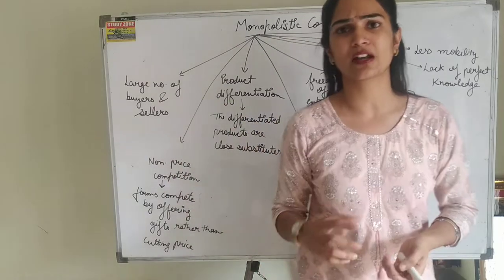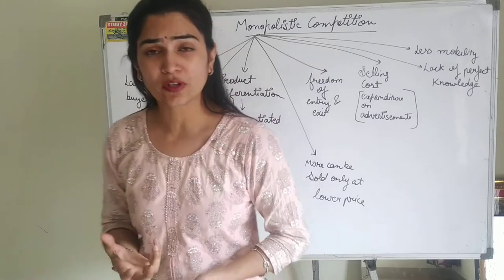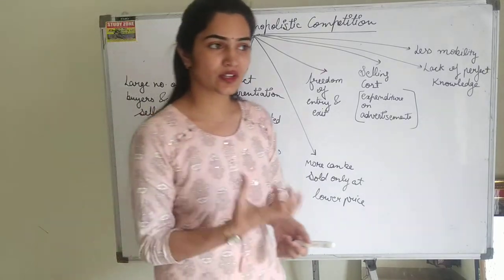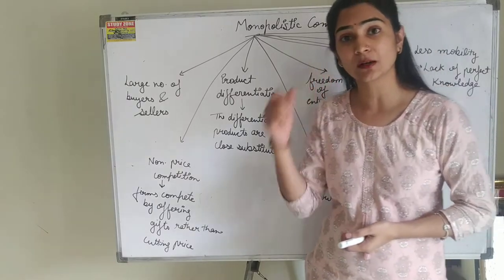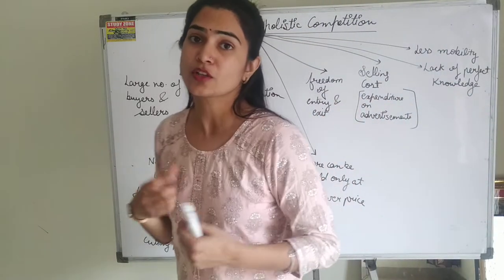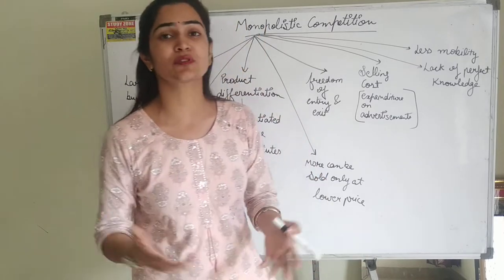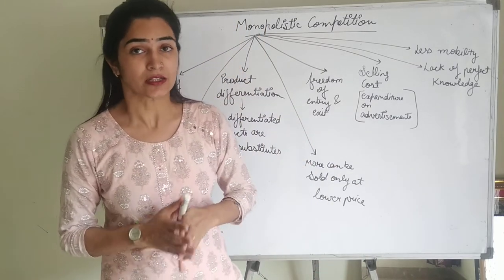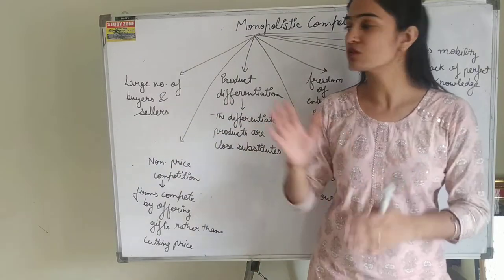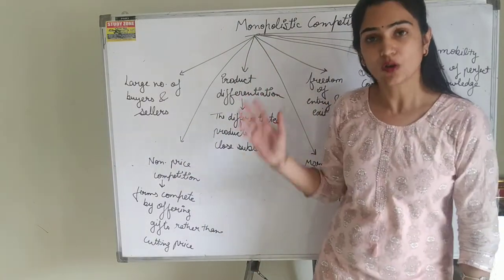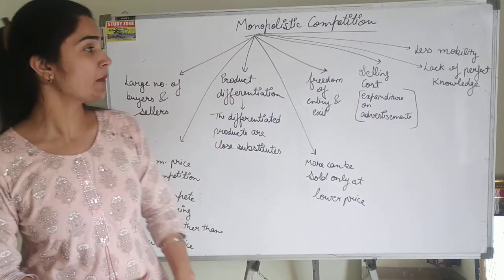Perfect competition is a rarely identified market — the chances of it occurring are very rare. Similarly, in today's competitive world, the chances of having a complete monopoly of a particular product are also very rare, because technology is so advanced that new products enter the market with substitutes. So the mixture of perfect competition and monopoly is monopolistic competition.